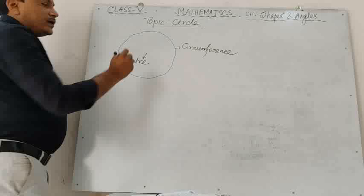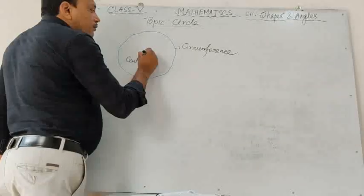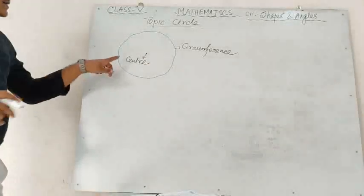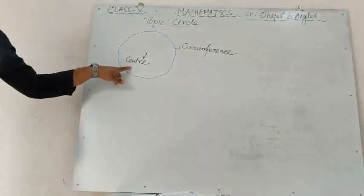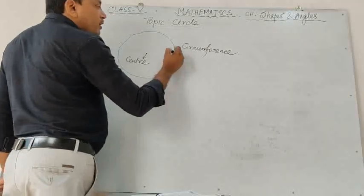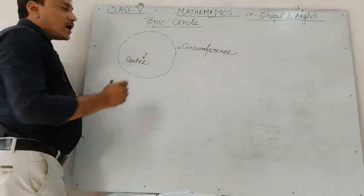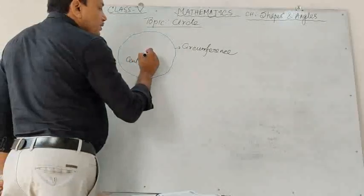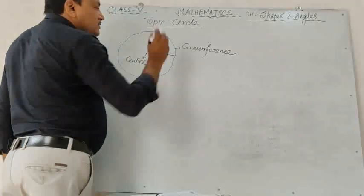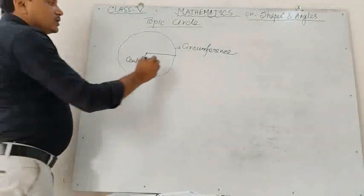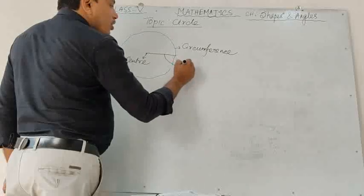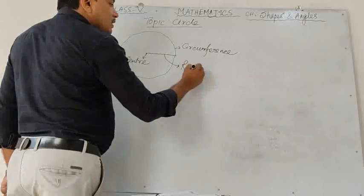The distance from the fixed point — that is, the center of the circle — to any point on the circle is called the radius of the circle.